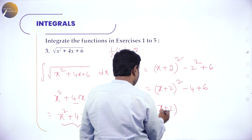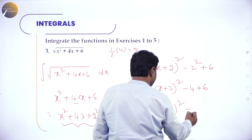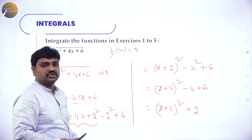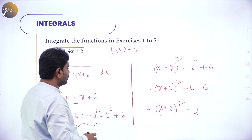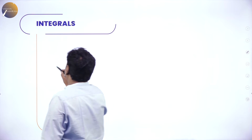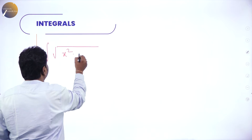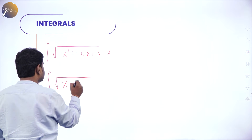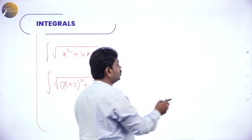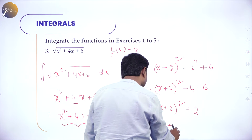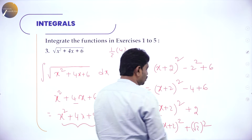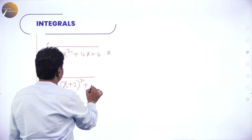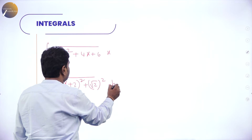Simplifying: (x+2)² + 2. So x² + 4x + 6 = (x+2)² + 2 = (x+2)² + (√2)². Now the integral ∫√(x² + 4x + 6) dx becomes ∫√((x+2)² + (√2)²) dx. Now it is in the form √(x² + a²) with x replaced by (x+2) and a = √2.